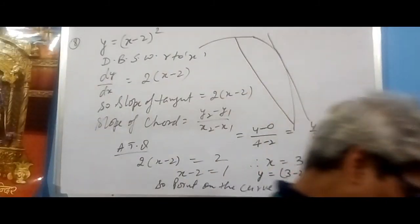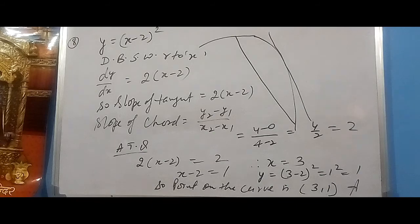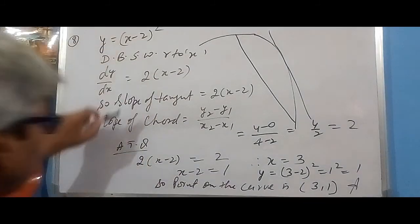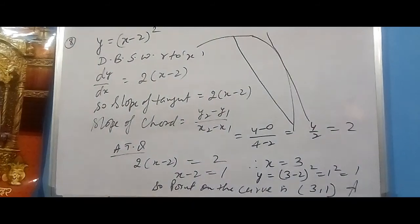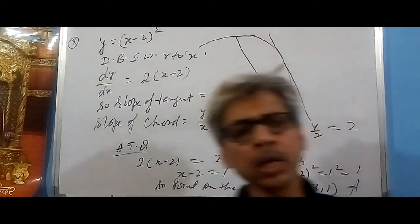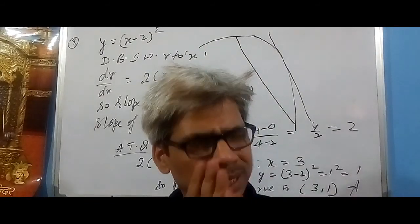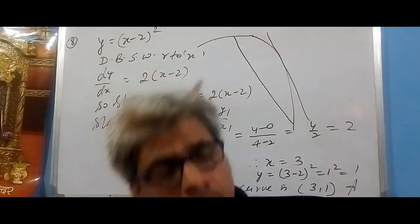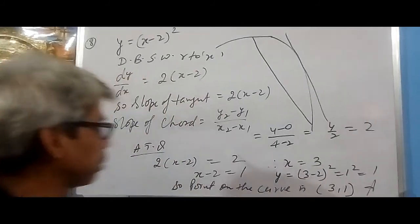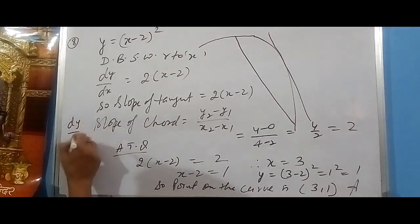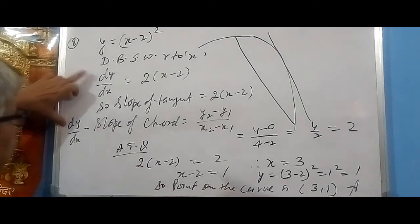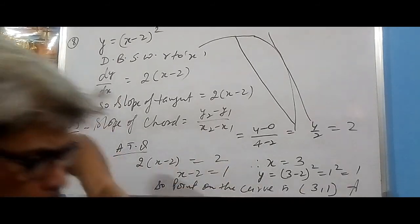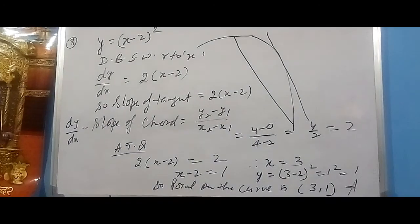For question 9, the approach is the same. Like we differentiated the curve and found slope of the chord, here a line is given instead. Differentiate the curve to get dy/dx as the slope of tangent, and differentiate the given line to get its slope as well. Then compare both derivatives to find the required point.